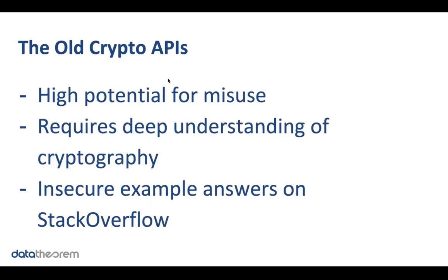The problems with the old cryptography APIs are that there are lots of different ways to make your crypto code insecure. These APIs require a deep understanding of cryptography to use correctly. Developers need to understand the characteristics of initialization vectors, know which algorithms are secure versus insecure, and manage their own keys securely. Unfortunately, the internet and Stack Overflow are littered with insecure example answers. If a developer doesn't know much about cryptography and Googles how to encrypt data, the code they copy is very likely to introduce vulnerabilities into their application.